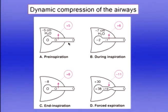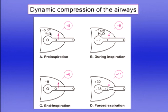Before the subject takes his inspiration to vital capacity, at FRC with no flow, all pressures are zero atmospheric — at the mouth, in the alveoli, and somewhere along the airway. The intrapleural pressure is about minus 5 cmH₂O, determined by the recoil pressure of the lung.